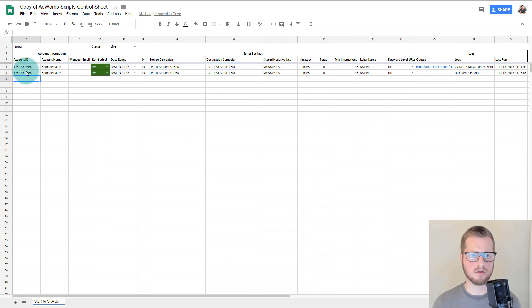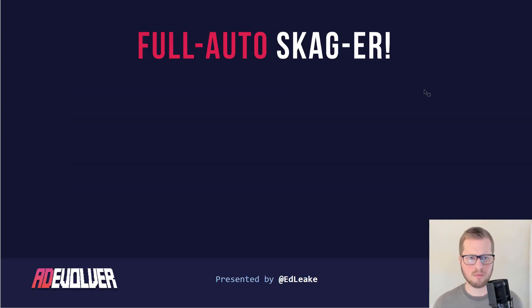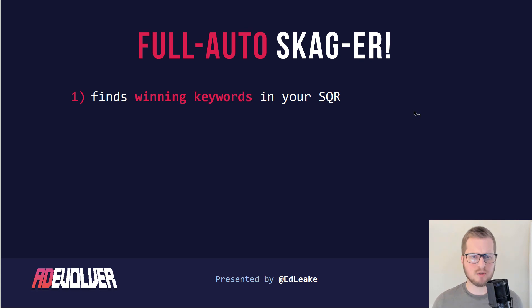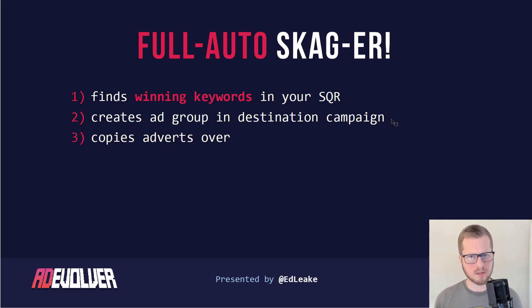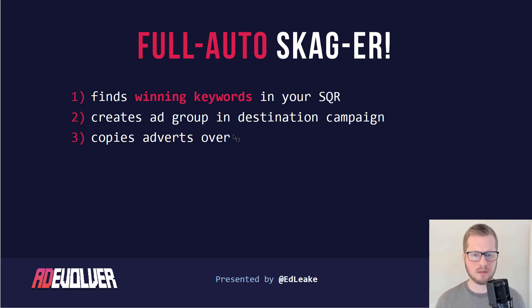That is the script — and of course you can add as many accounts and campaigns as you wish. So to recap the full auto SCAGGER: it finds winning keywords in your search query report based on your targets, creates the ad group in the destination campaign, copies the keyword over, and creates ads based on the ads used previously. You then have the opportunity to add more specific and fresh ad copy afterward, which I'd recommend after the SCAGs have had time to run.